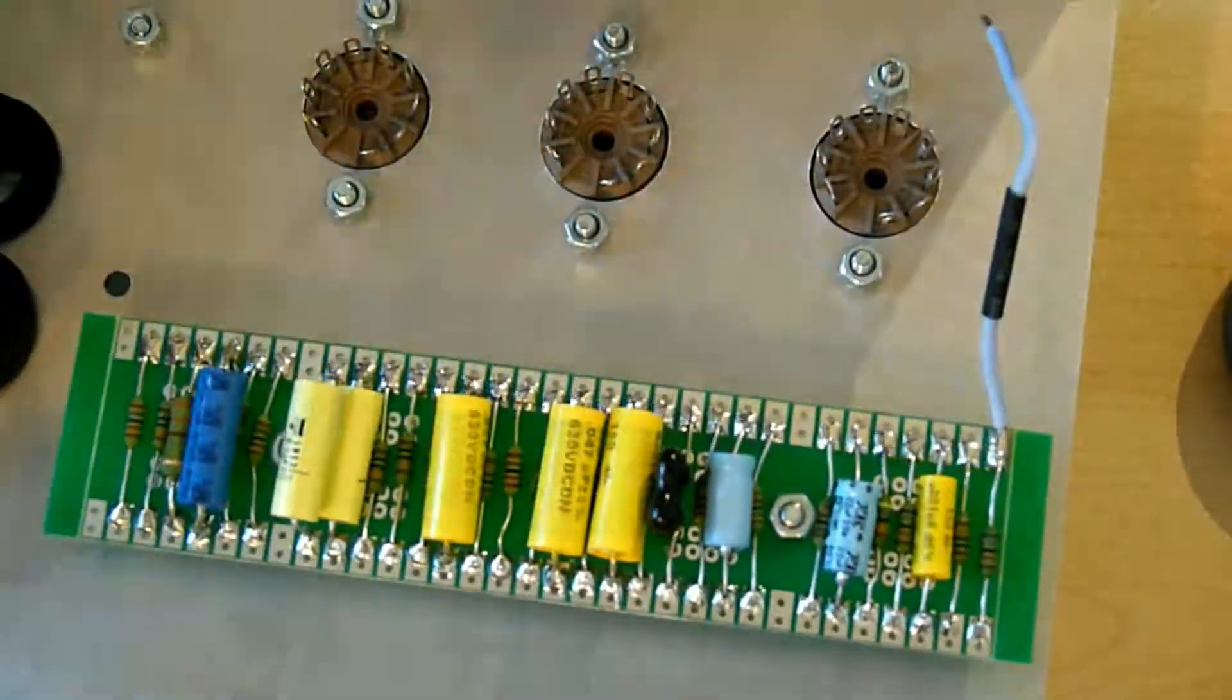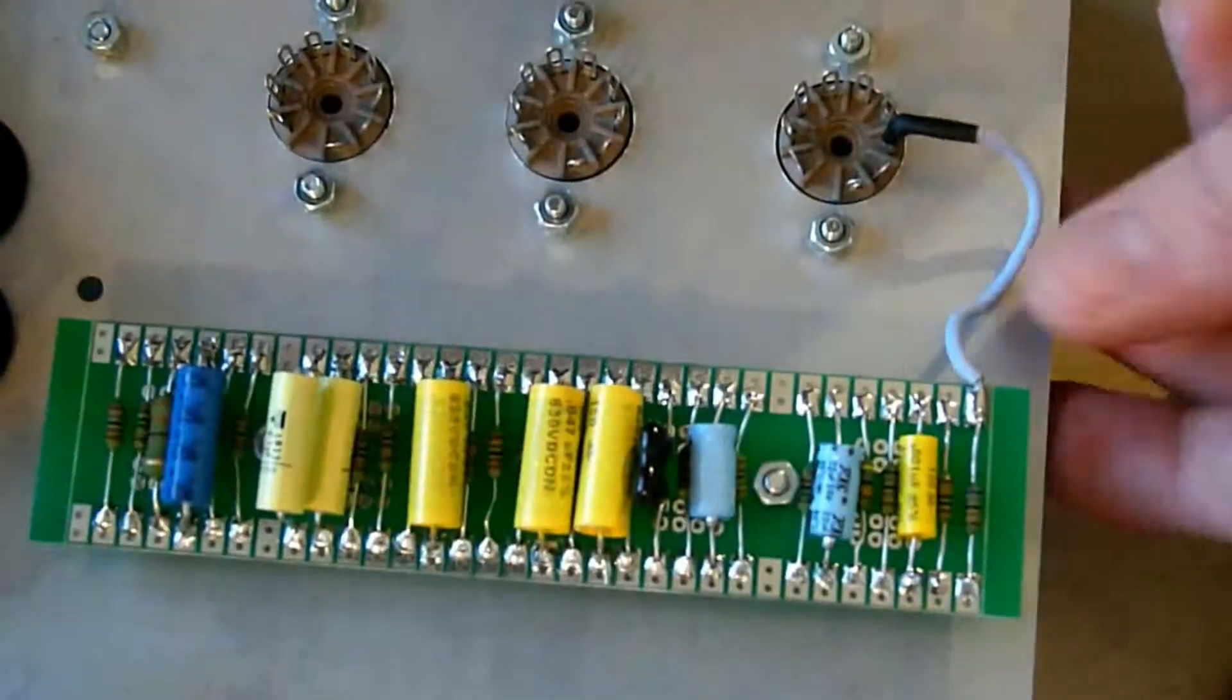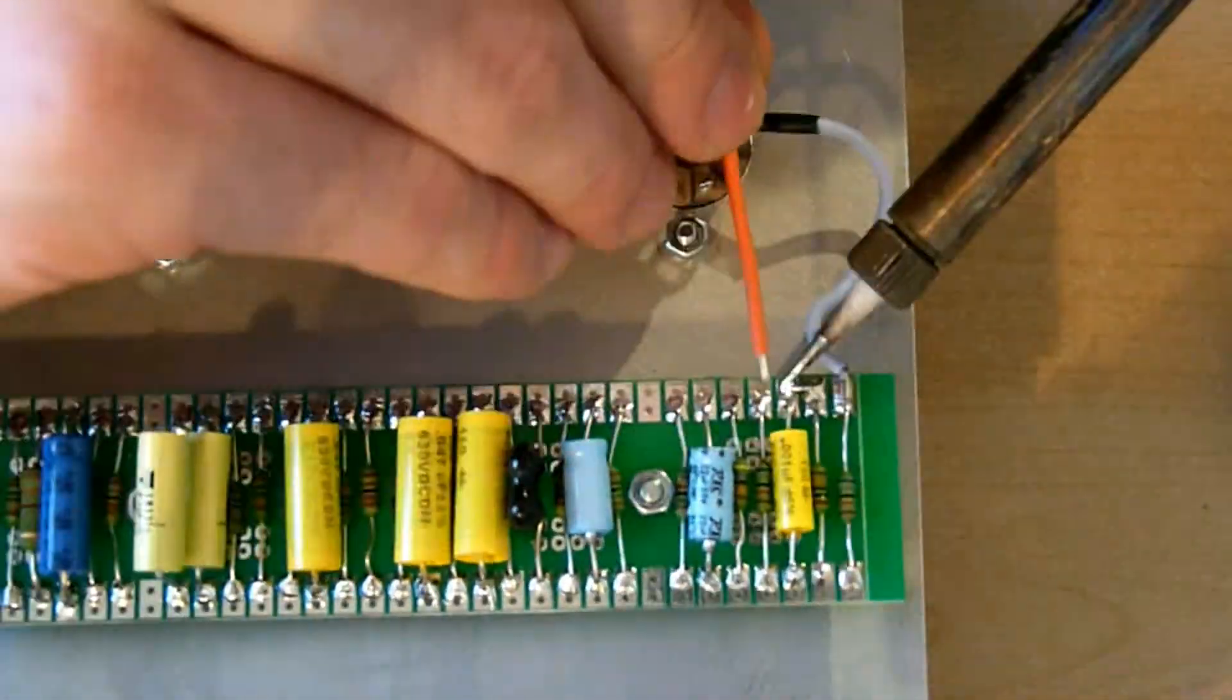I started my soldering and connecting on the down left side of the board. You should secure your connections with heat shrink tube to make sure not to create a short somewhere.